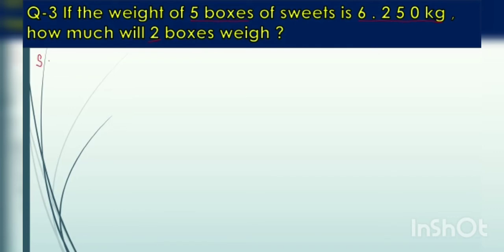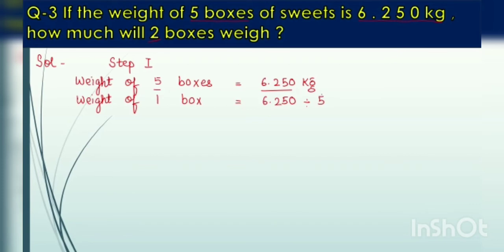In the solution of this type of question there are 2 steps. Step 1: First of all you will write down weight of 5 boxes. It will be written 6.250 kg. Now here of 5 boxes it is given, so you have to find out the weight of 1 box. So weight of 1 box is equal to 6.250 divided by 5.